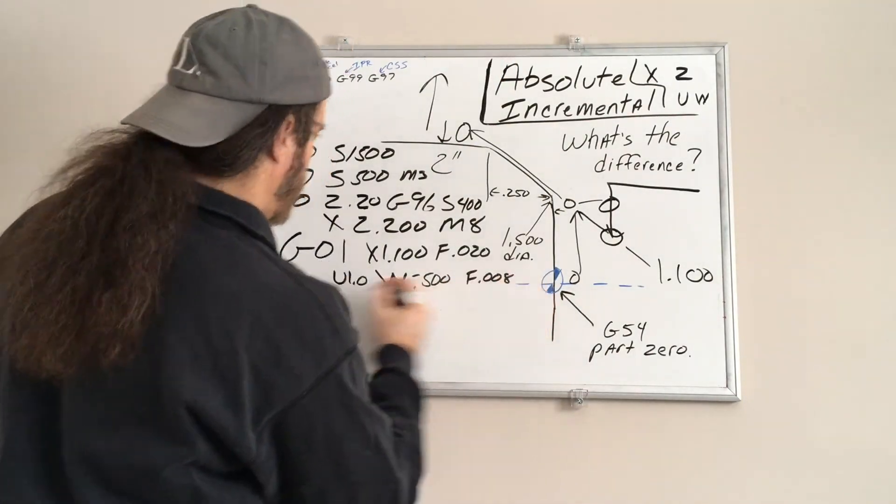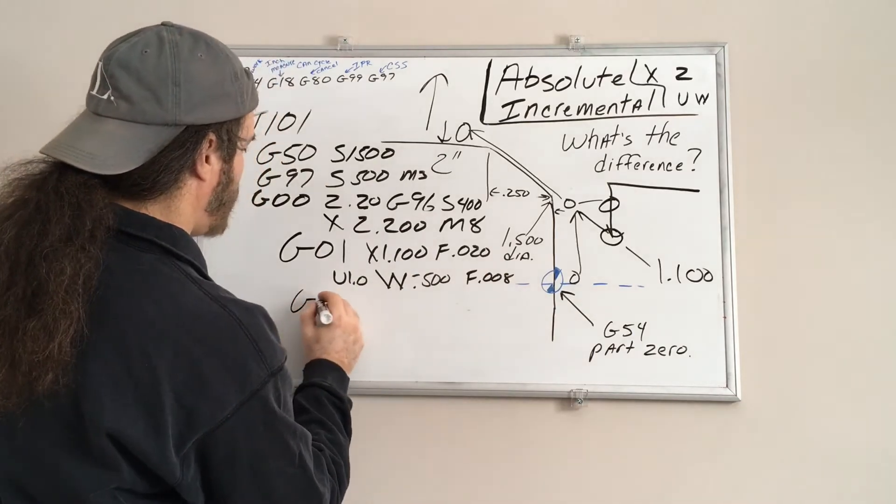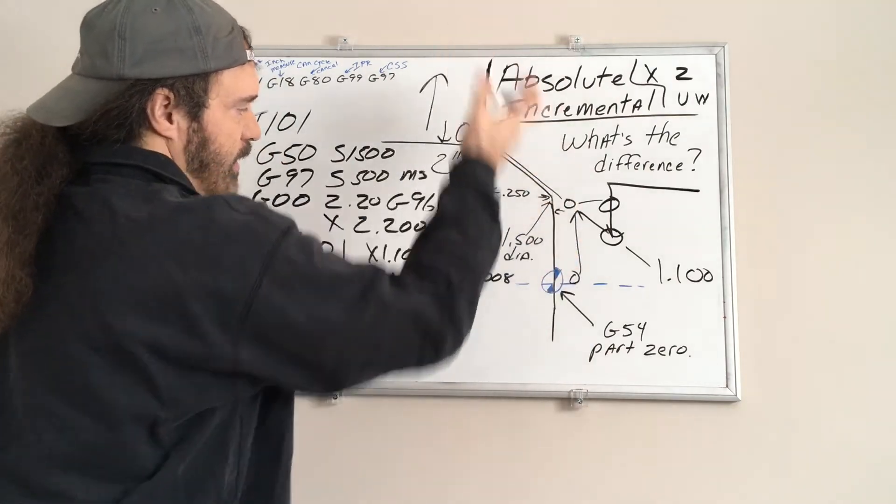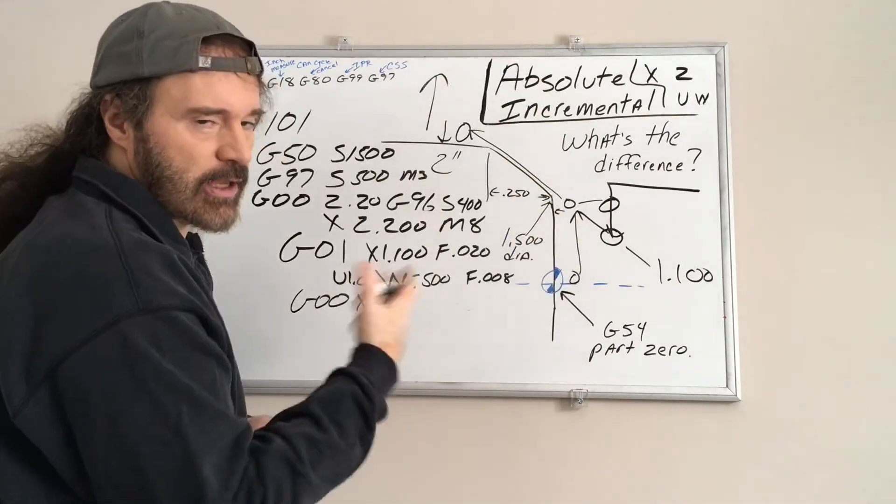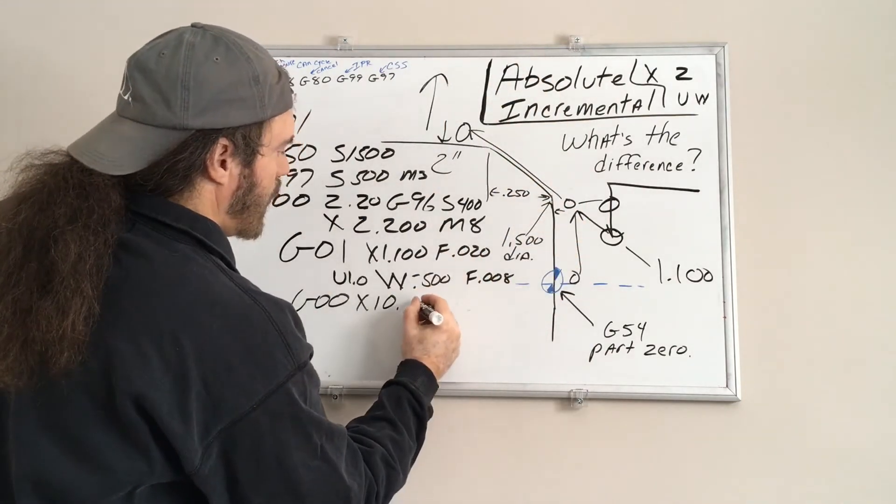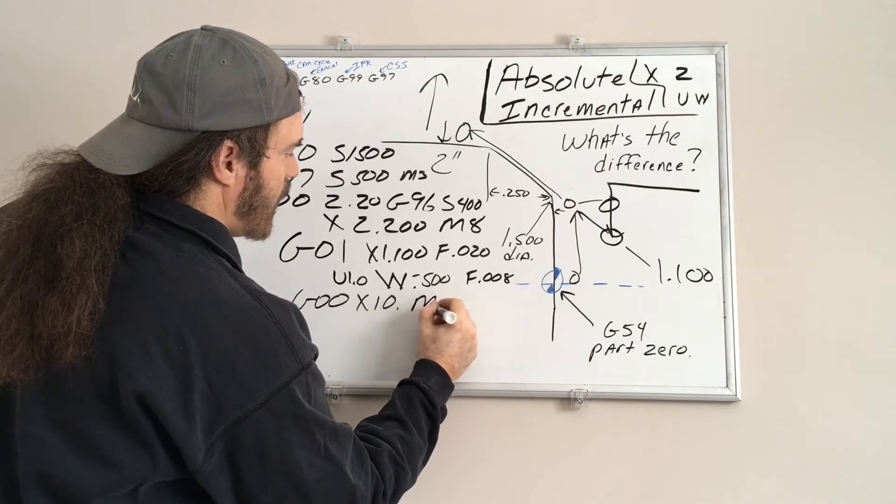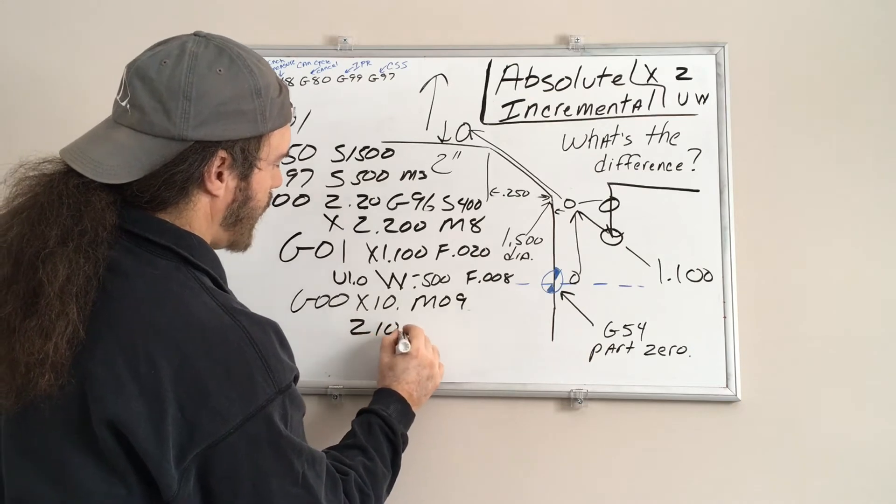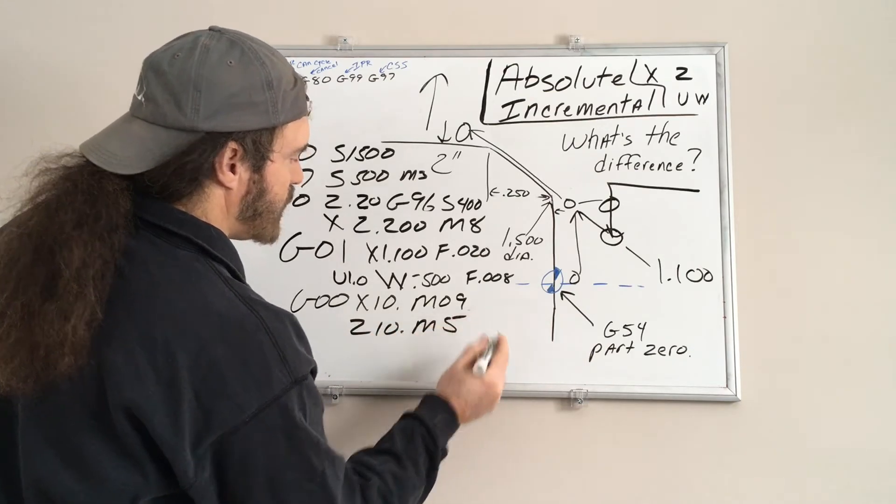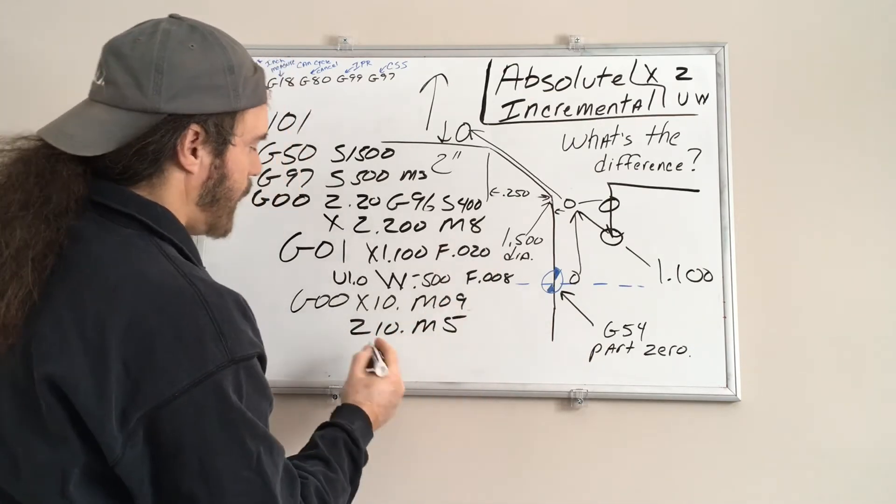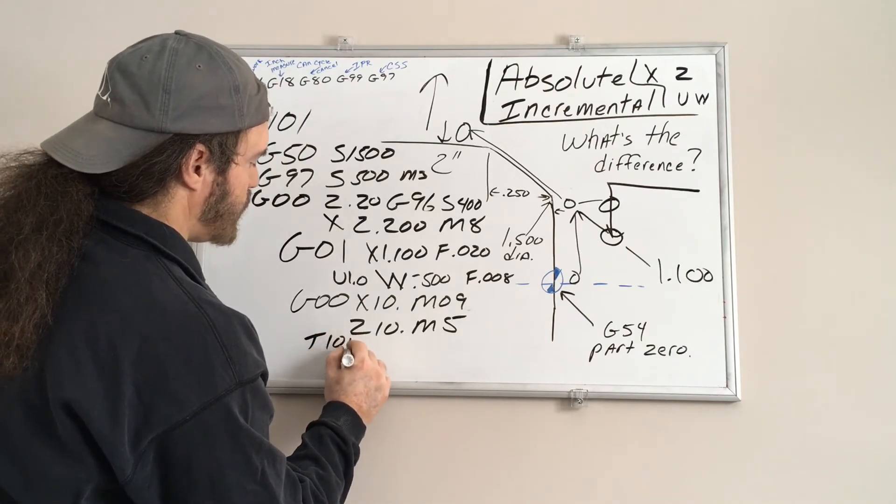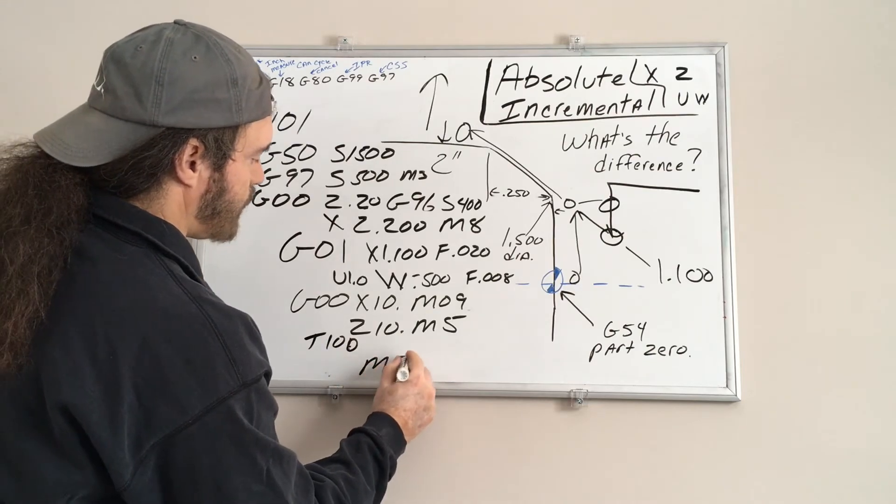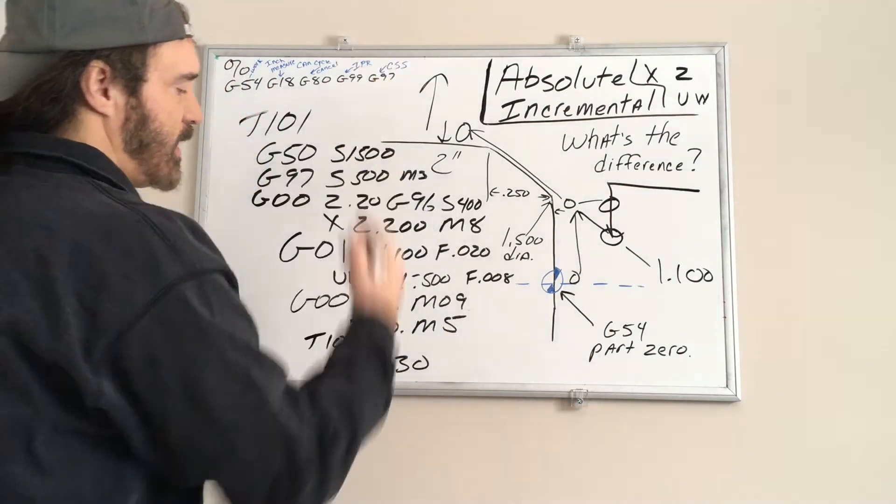We'll just have it rapid X 10 point - 10 inches from spindle center, that could vary. We'll have the coolant turn off. Since we're already in rapid, we'll have it rapid to Z10. Have the spindle turn off, which is an M05. We'll cancel the tool, T100, and just have it rewind back to the top with an M30.